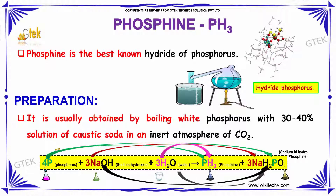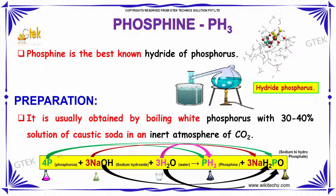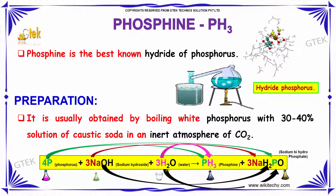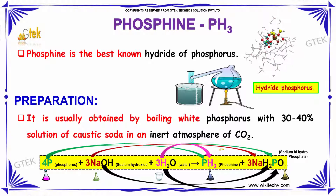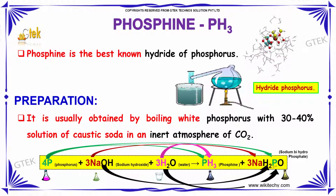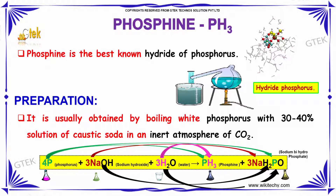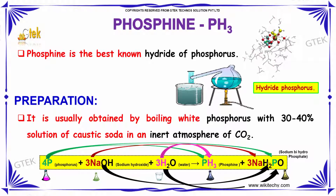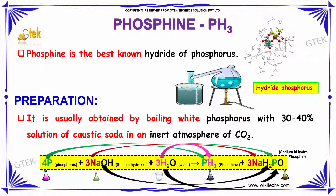If we talk about the preparation, Phosphine is usually obtained by boiling white phosphorus with a 30 to 40 percent solution of caustic soda, in an inert atmosphere of carbon dioxide. This gives Phosphine and sodium dihydrogen phosphate. This is how Phosphine is prepared.